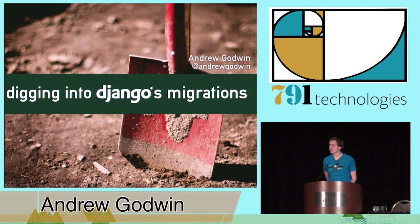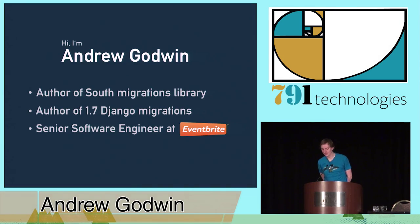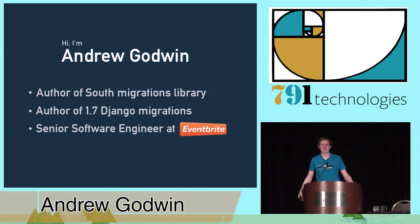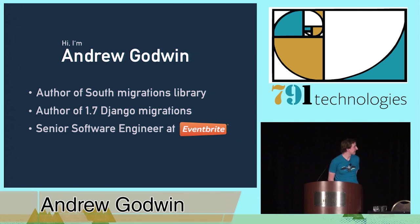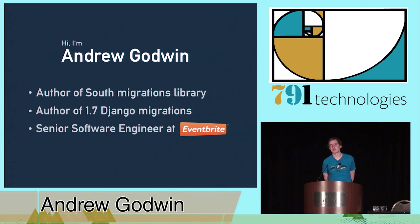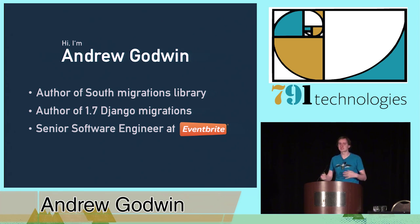Hello everyone. As Russ mentioned, I am Andrew. I am the author of South, and of course of the now-released Django 1.7 migrations. I'm a senior software engineer at Eventbrite, where I'm on our architecture team doing database stuff and general difficult design decisions, very analogous to what I've been doing in Django.